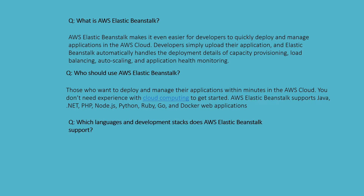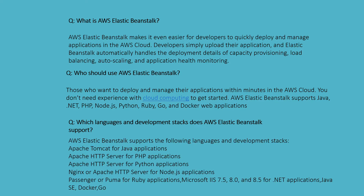Which language and development stack does AWS Elastic Beanstalk support? AWS Elastic Beanstalk supports the following languages and development stacks: Apache Tomcat for Java applications, Apache HTTP Server for PHP applications, Apache HTTP Server for Python, and Nginx or Apache HTTP Server for Node.js applications, Passenger or Puma for Ruby applications.